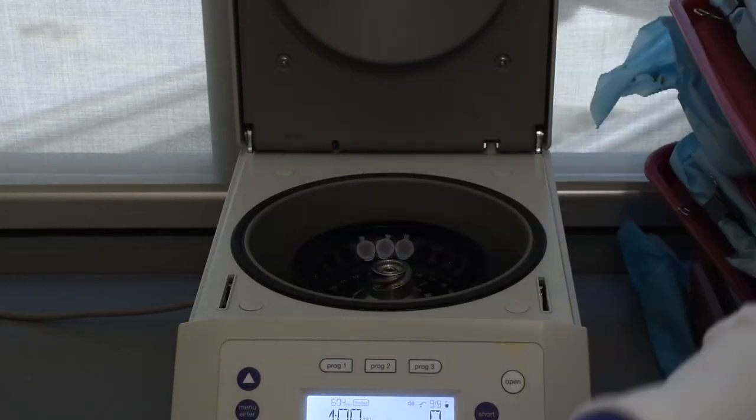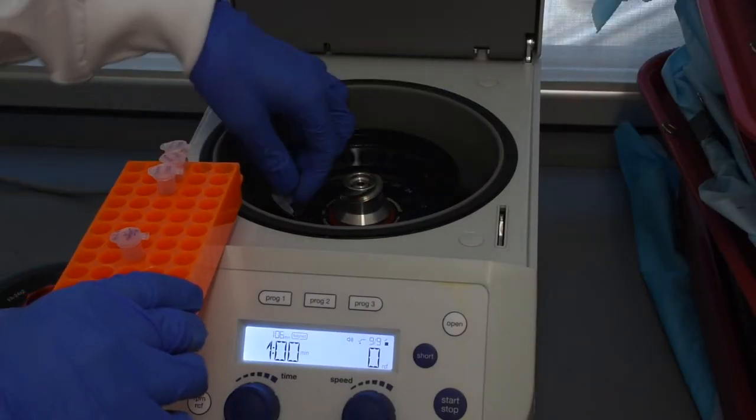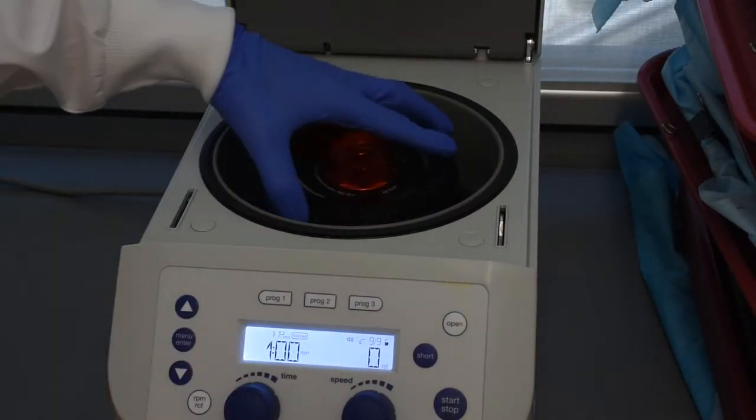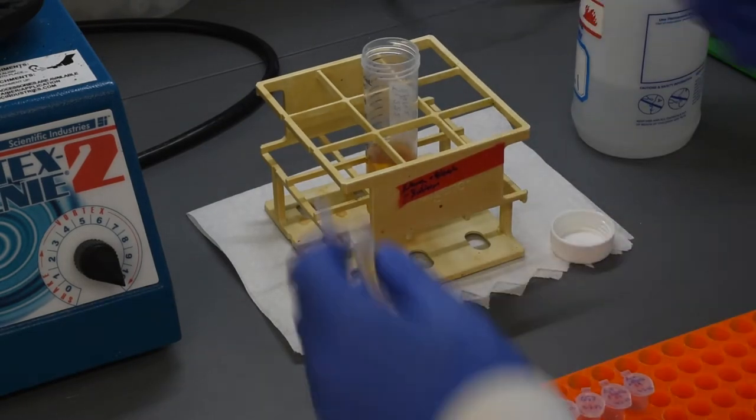Centrifuge again at the same settings. Pour off the supernatant and return the tubes to the rack.